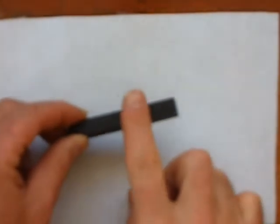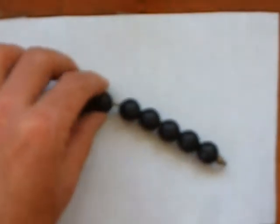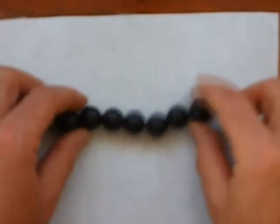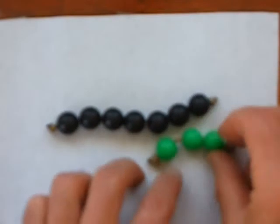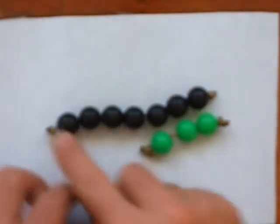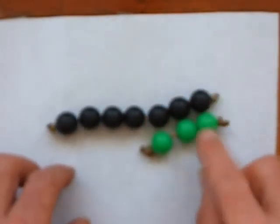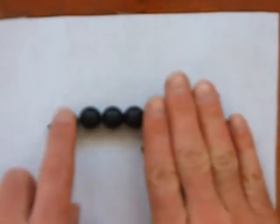Then we can do subtractions with the strings and the Cuisenaire rods. Although we cannot really take away a part here, we would have to cut apart our rods and I would not recommend doing that. But we can go backwards in the opposite direction. We count until seven, then we go three steps back. There are four beads remaining.